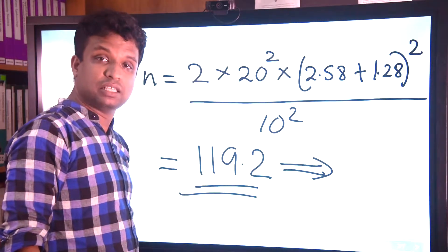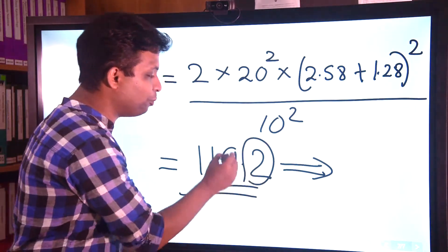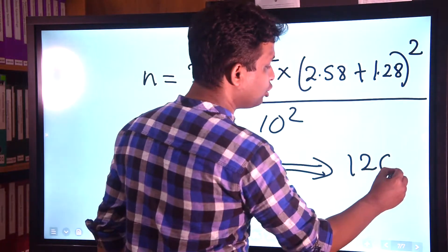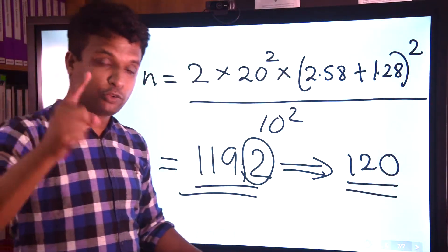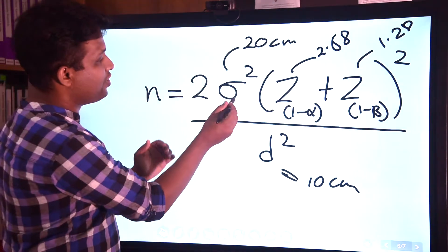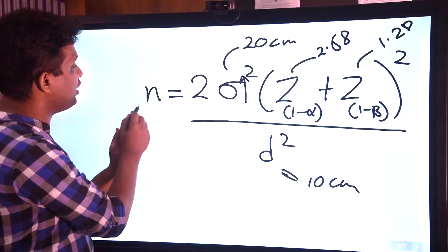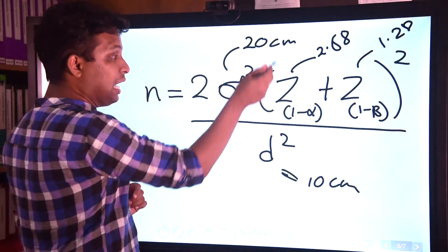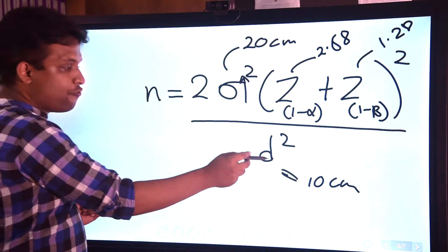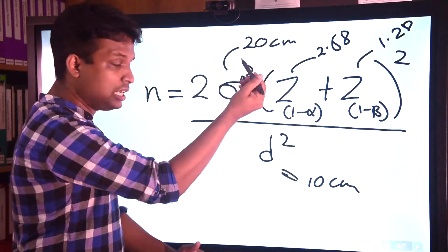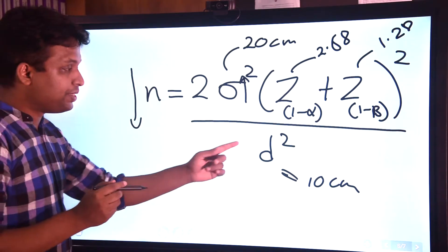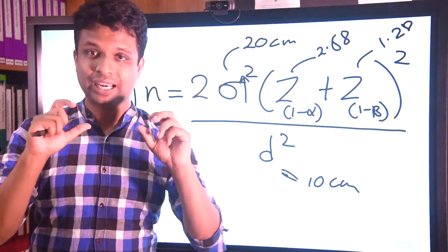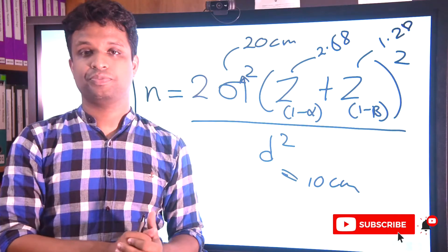So the required minimal sample size is 119.2, but since we can't have 0.2 of a person, the minimal sample size is 120. To quickly recall: when variance is high, you need a higher sample size; when you need higher power, you need a higher sample size; when you need higher confidence, you need a higher sample size; when the expected difference is high, your sample size will be lower; and when the expected difference is low, you need a higher sample size. That is the summary for calculating sample size for mean differences. Thank you.